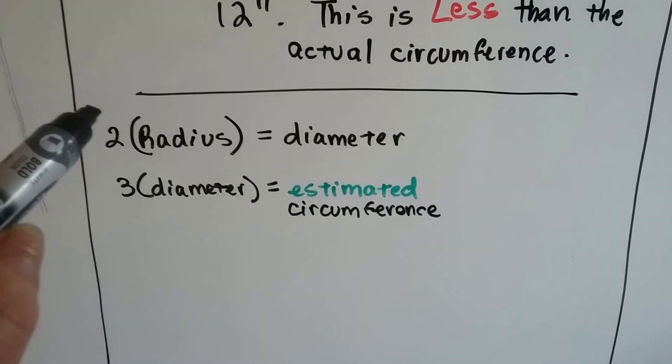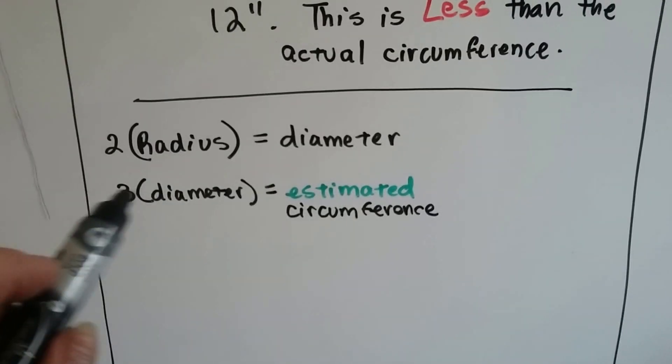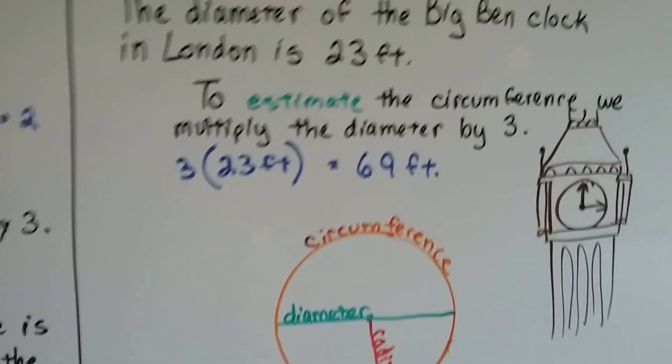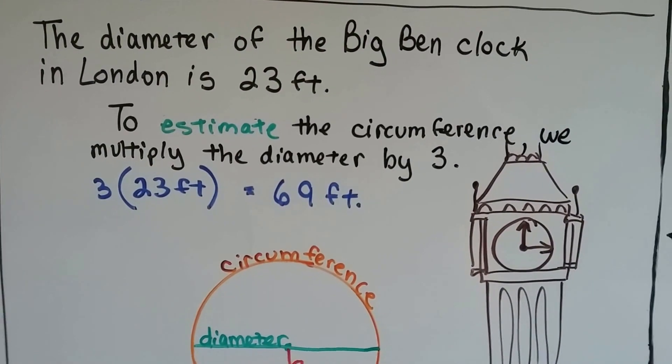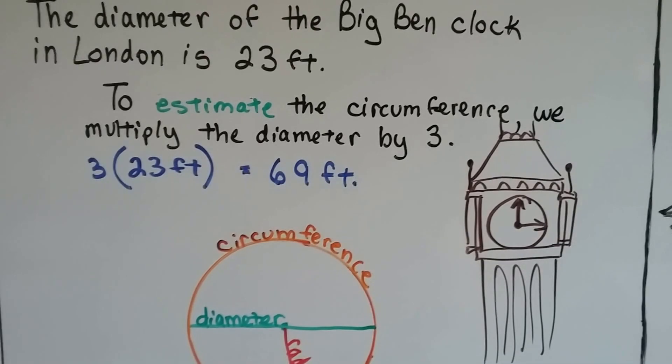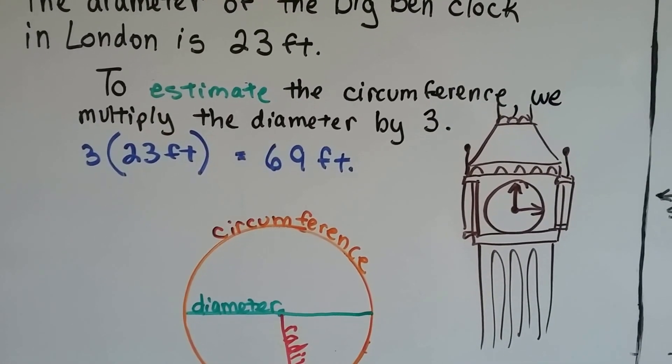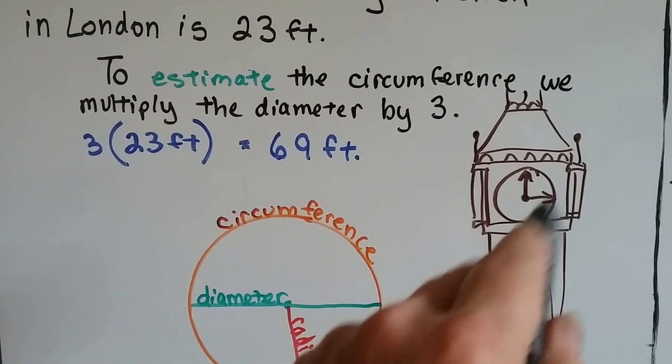So for estimating, you just take the radius and you multiply it by two to get the diameter. Then you multiply that by three and you have an estimated circumference. The diameter of the Big Ben clock is 23 feet. And to estimate the circumference around the clock face, we just multiply that by three. So three times 23 feet is approximately 69 feet. That's a pretty big clock.